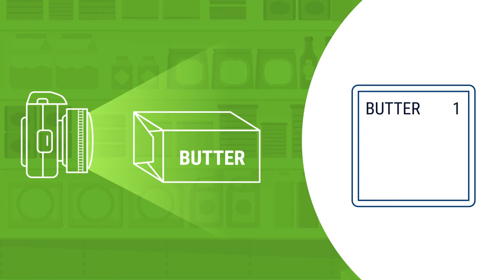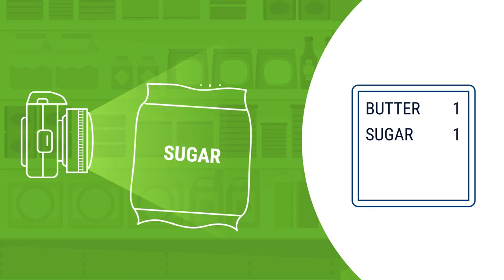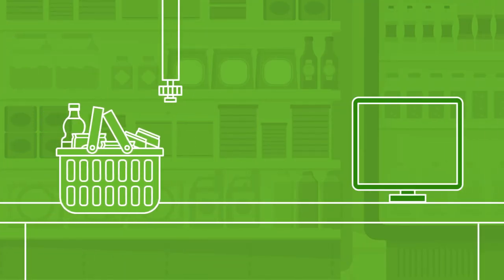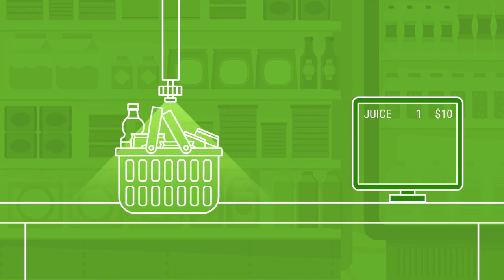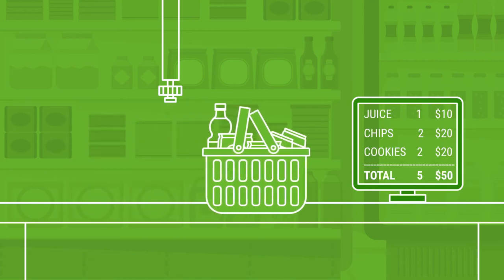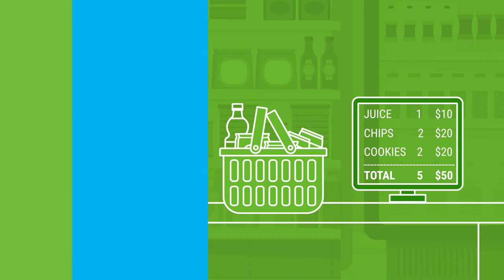A Smart Trolley requires a camera to be integrated into the system seamlessly, along with having the necessary features to automatically detect and recognize objects in a shopping trolley. Whereas a Smart Checkout System needs to be able to automatically identify objects at the checkout counter without any human supervision.